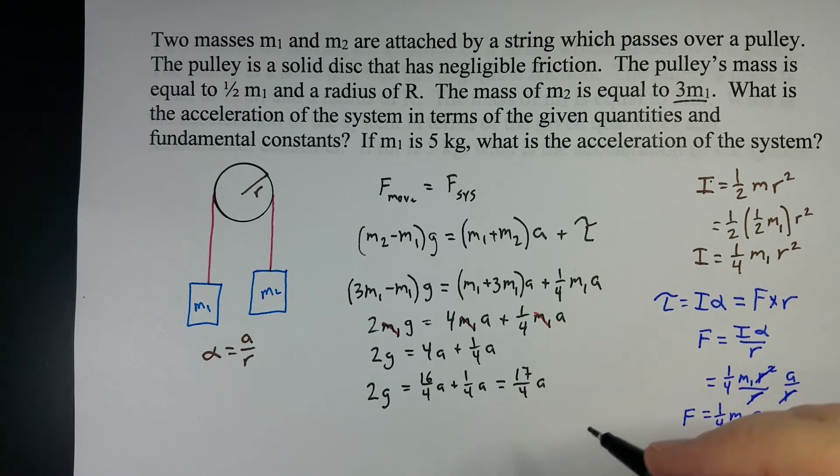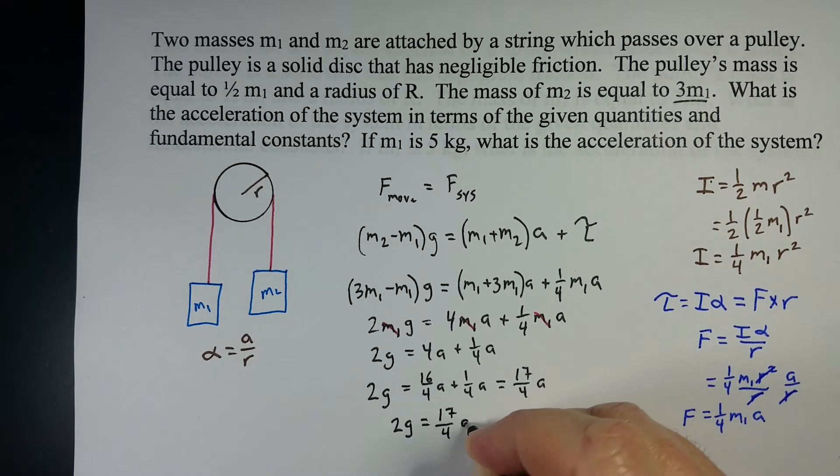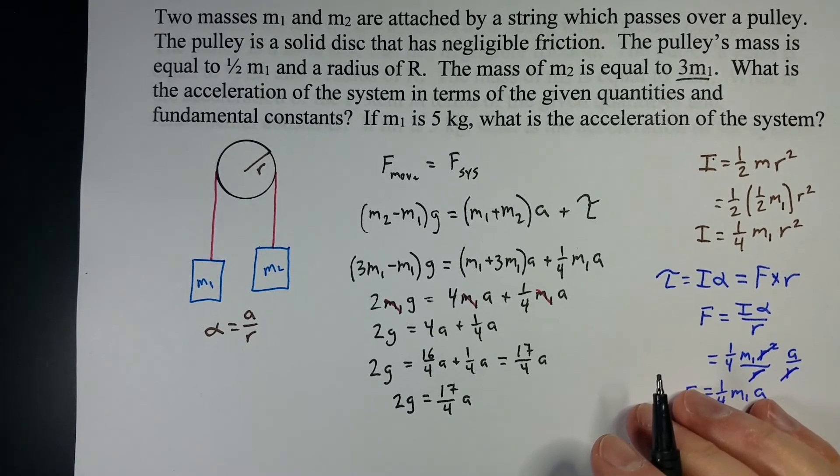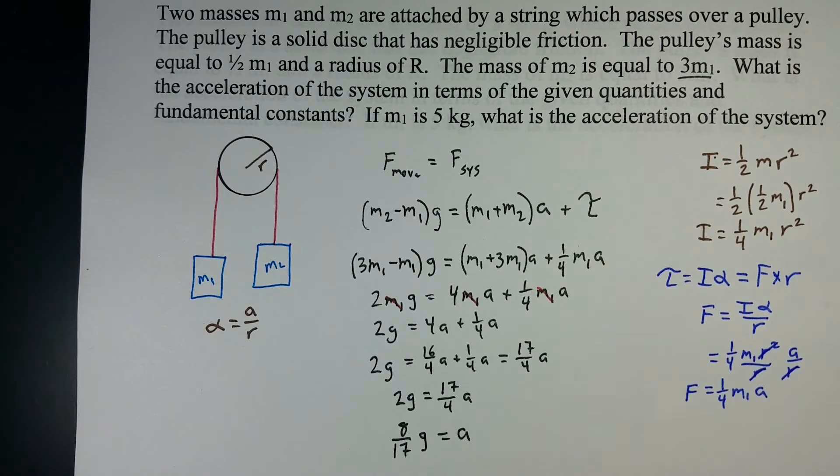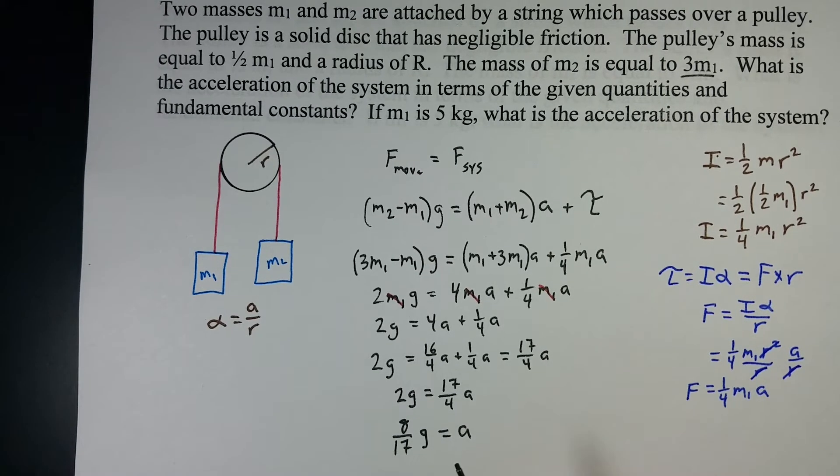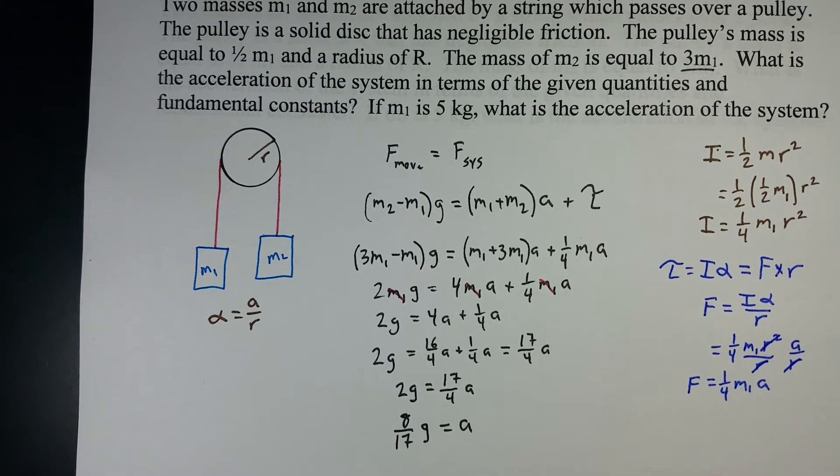I'm going to simplify this a little bit, then cross-multiply. We've got 2G equals 17 over 4A. I'm going to move that over, so the 4 will go on top, 17 will go on the bottom. We get 8 over 17G equals my acceleration. That is this solved for the acceleration of our system. It's 8 over 17G. Let's go ahead and put our masses in and see what we get.